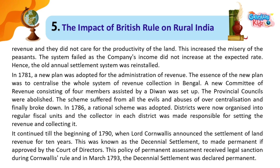It continued till the beginning of 1790, when Lord Cornwallis announced the settlement of land revenue for 10 years. This was known as the decennial settlement, to be made permanent if approved by the court of directors. This policy of permanent assessment received legal sanction during Cornwallis's rule, and in March 1793, the decennial settlement was declared permanent.